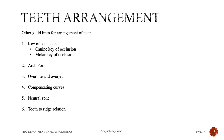Compensating curves — the curve of Spee, curve of Wilson, and curve of Monson — must be incorporated to achieve balanced articulation. The neutral zone in the lower arch is the region where buccal forces and tongue forces are neutralized; teeth placed in the neutral zone ensure that force from the tongue is neutralized by the cheek and vice versa. If teeth are placed too far buccally or lingually, the denture becomes unretentive or dislodges. For tooth-to-ridge relation: upper teeth are arranged slightly anterior to the crest of the ridge; lower teeth are arranged exactly on the crest of the ridge.